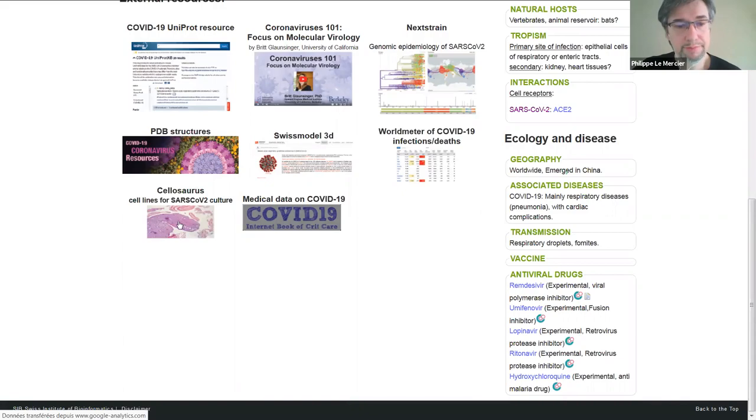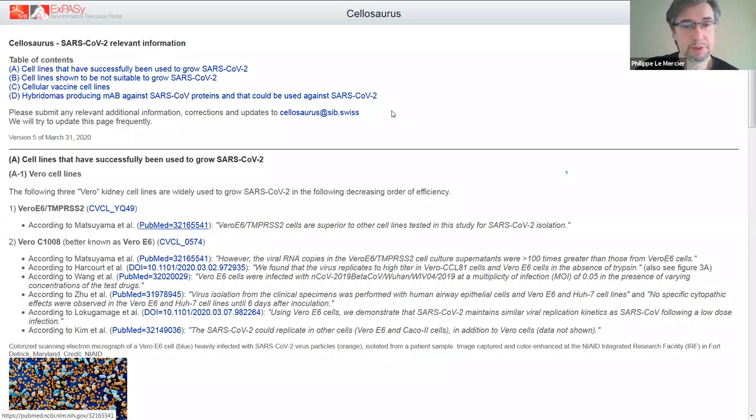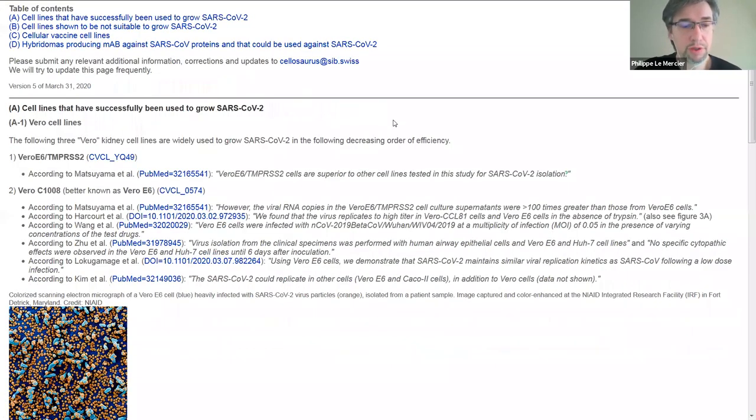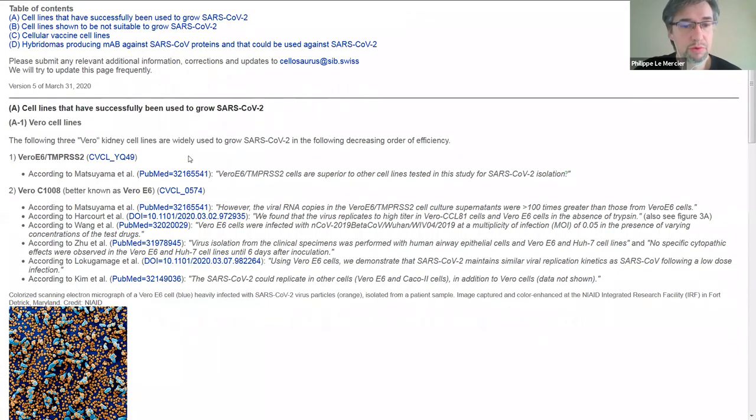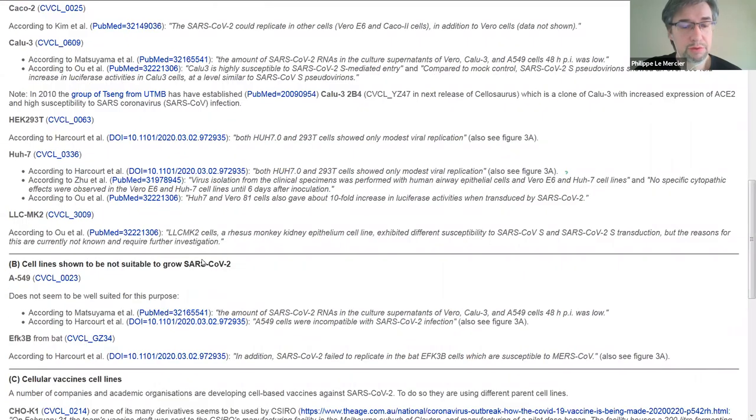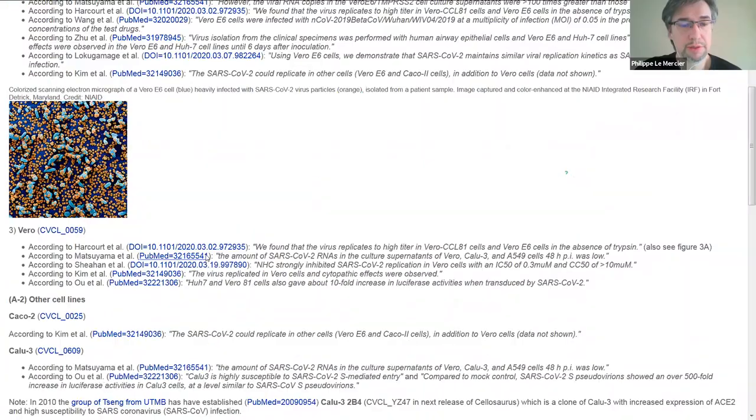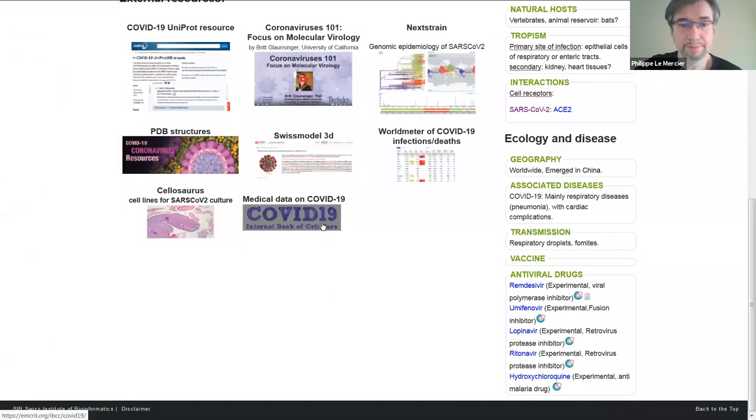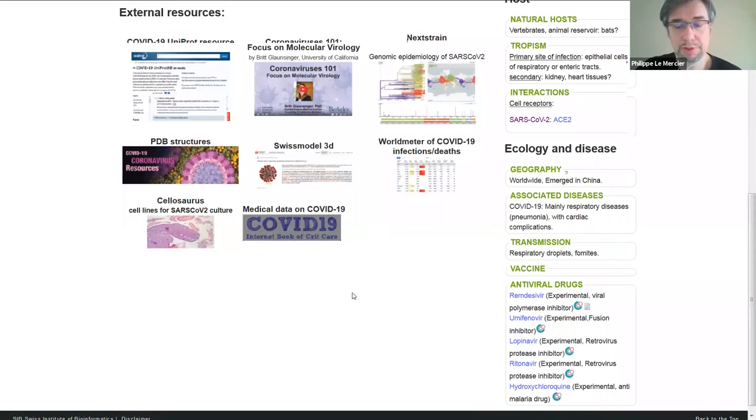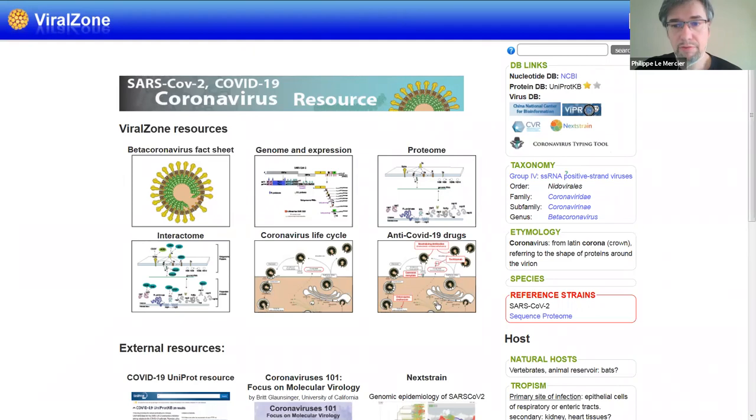Cellosaurus is a website, also from the Swiss Institute of Bioinformatics. It tells about cell culture, every data on cell culture. It gives a site for SARS-CoV-2 cells, cell lines that have been used to grow, and those that are not suitable. If you want to grow SARS-CoV-2 in whatever cell system, you can have a lot of information there. And then medical data COVID-19, which was already presented previously. I think I've went through everything. I will stop. If you have any questions, thank you.